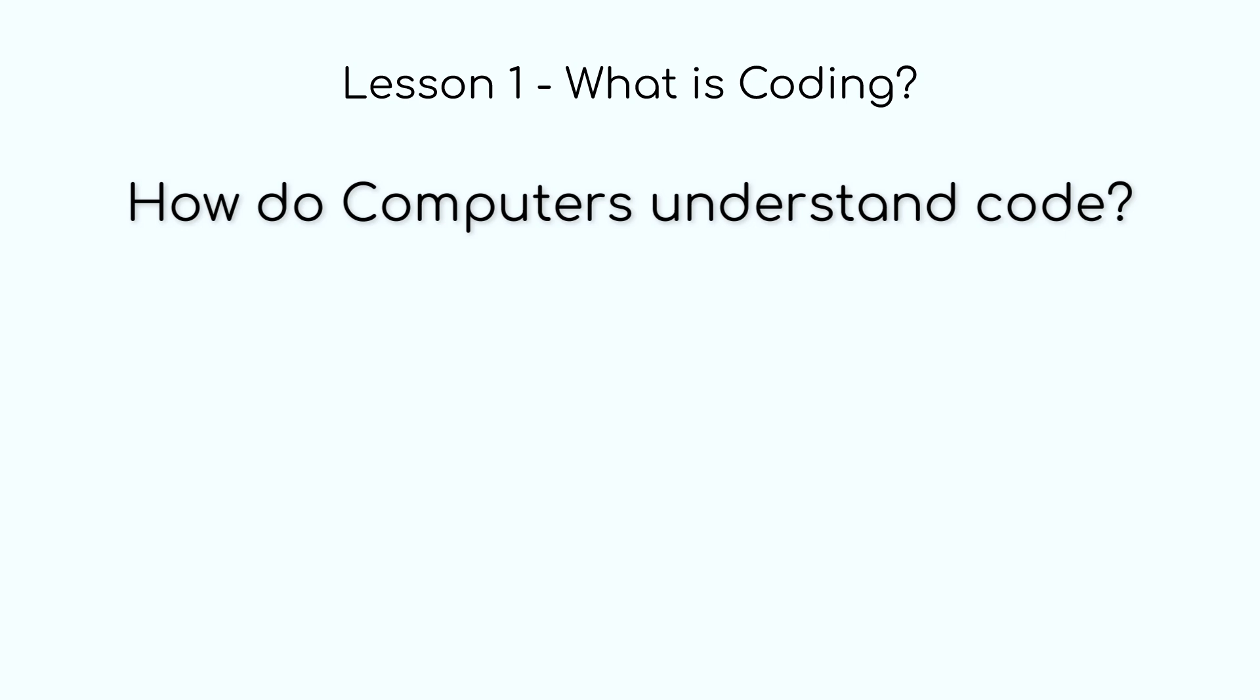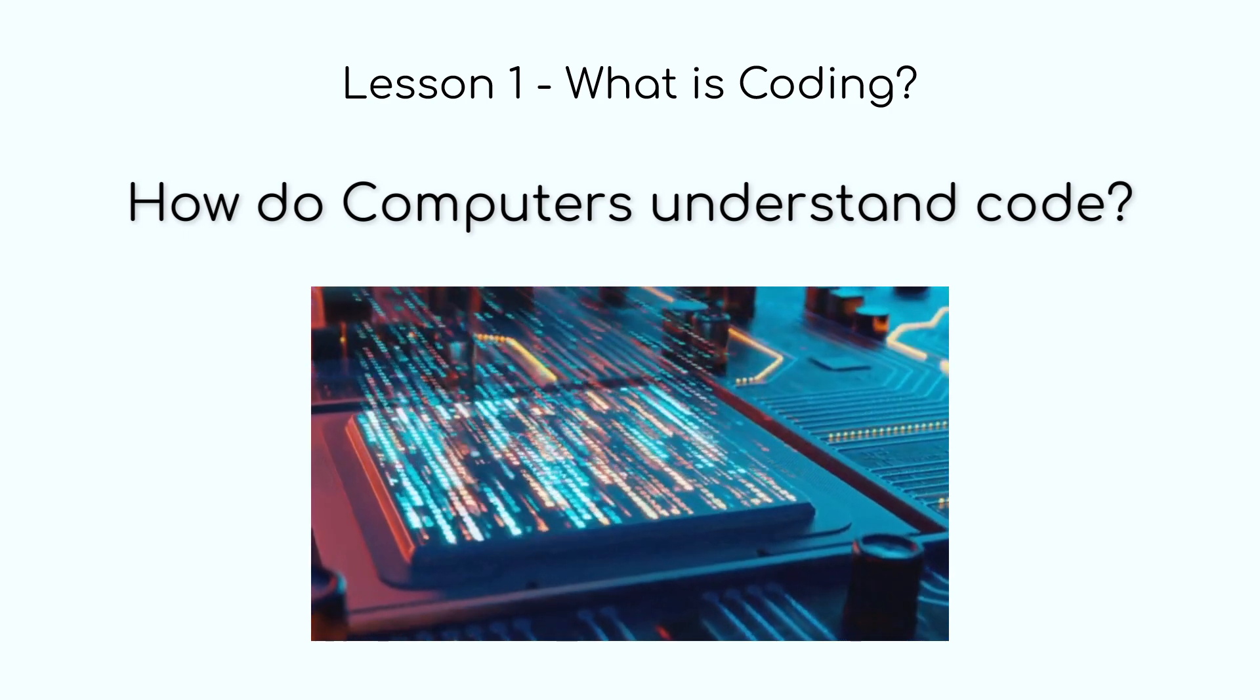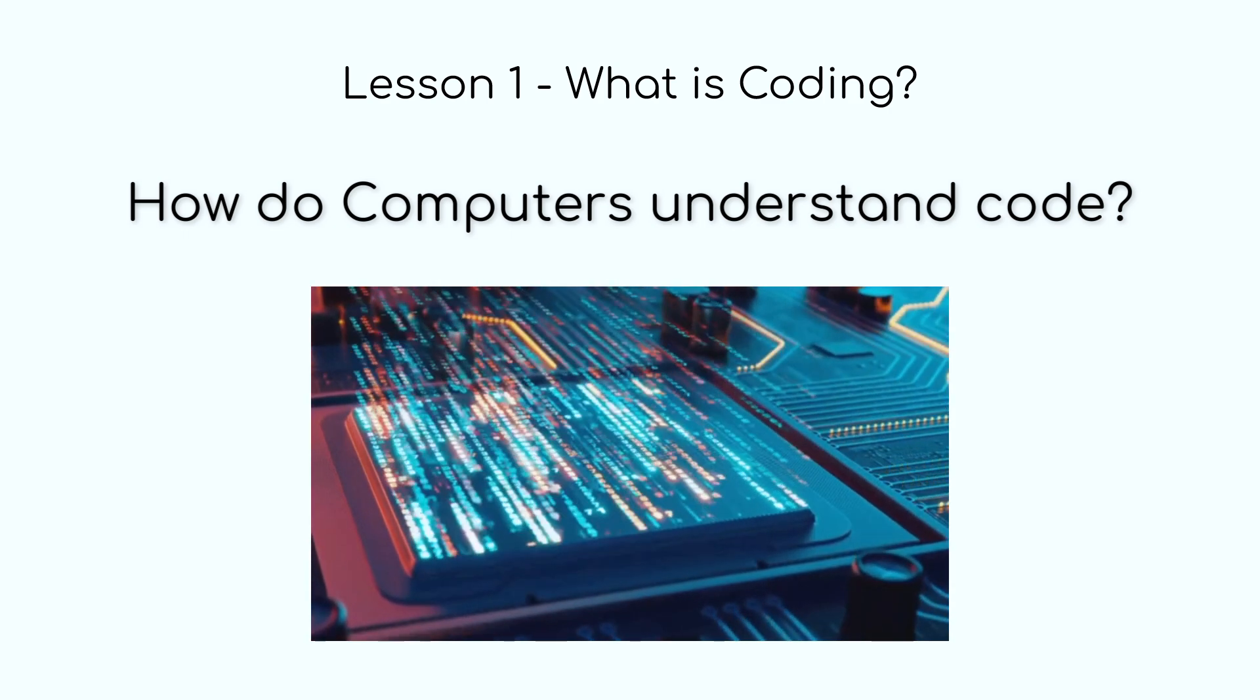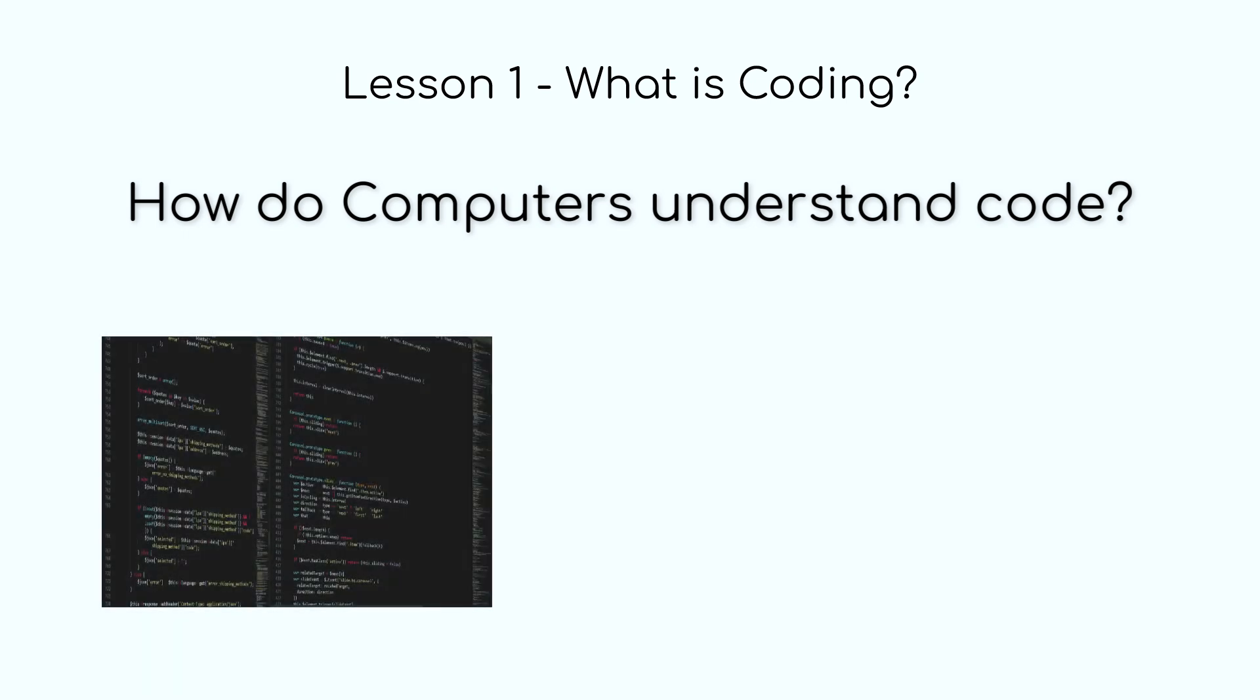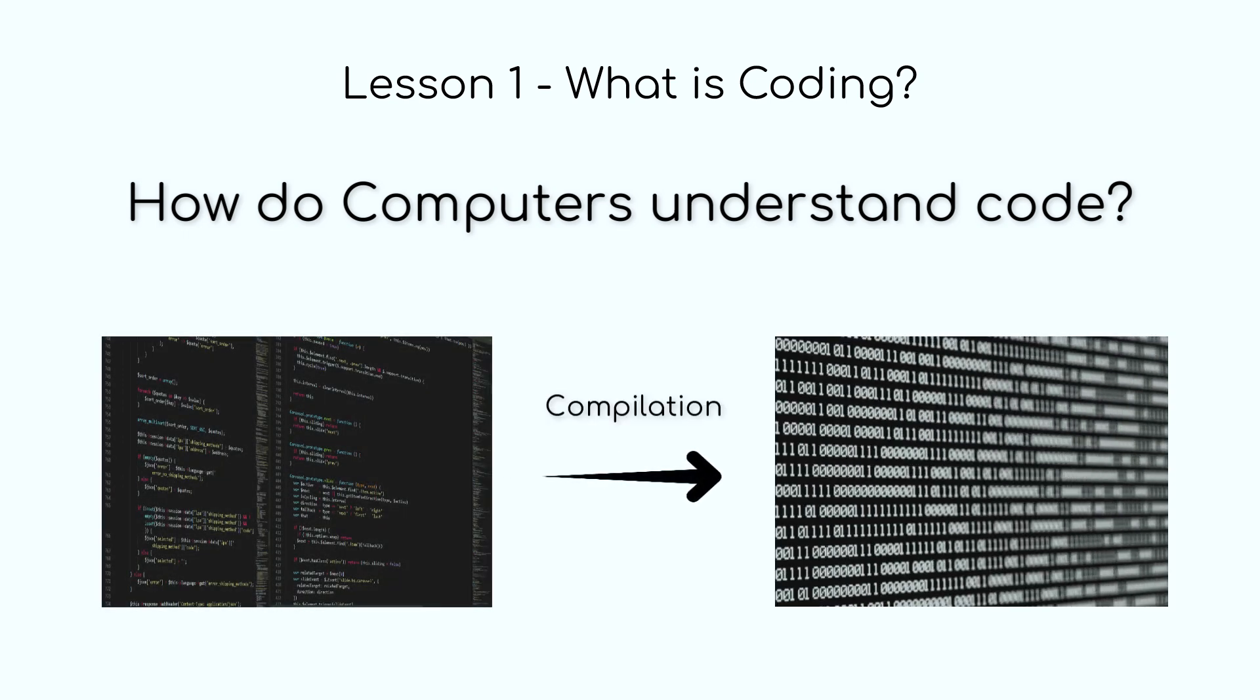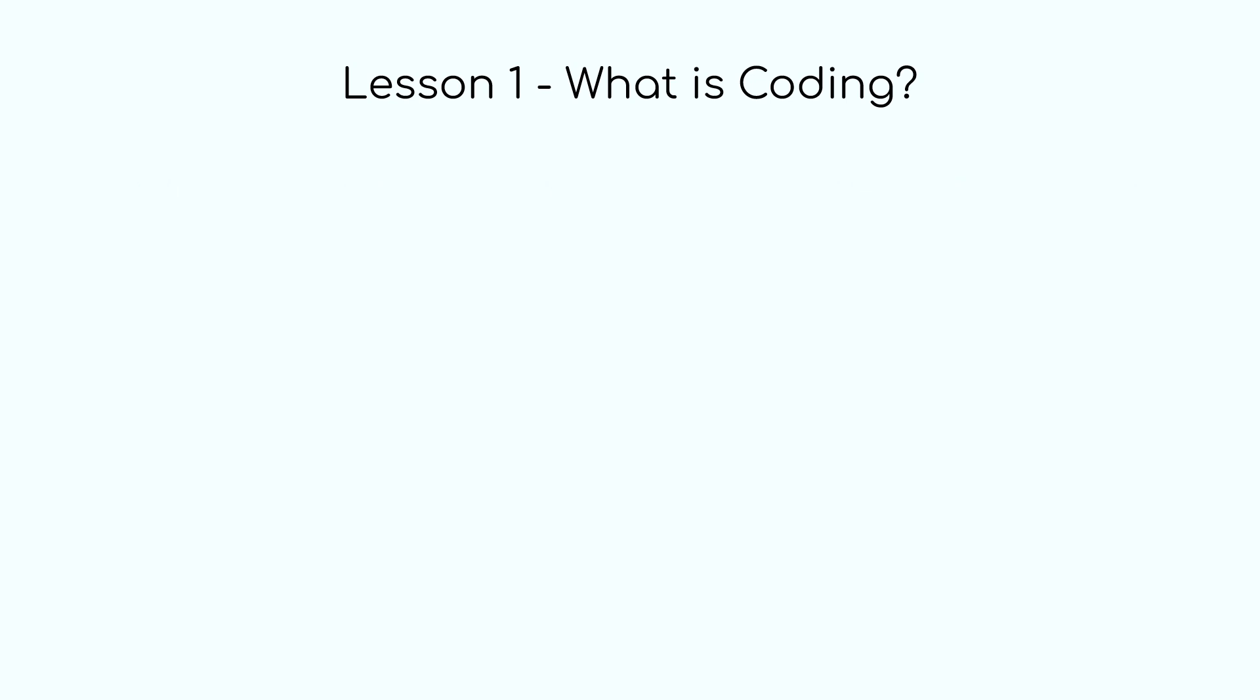Think of a light switch. When it's on, it's like a one, and when it's off, it's like a zero. Computers work the same way, using tiny electrical pulses that switch on and off to process and store all kinds of data. When you write code, it eventually gets translated into a series of ones and zeros that the computer hardware can understand.